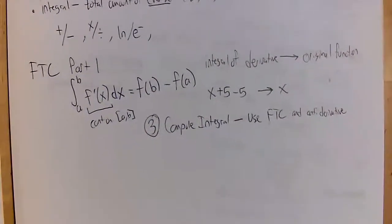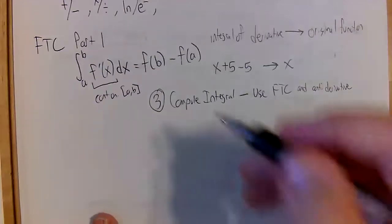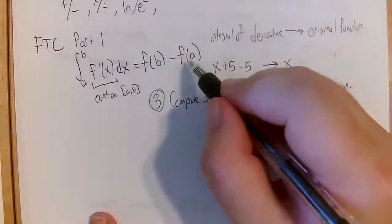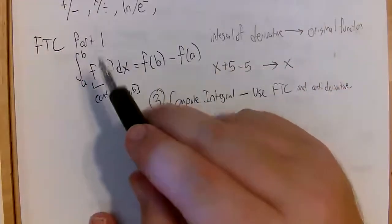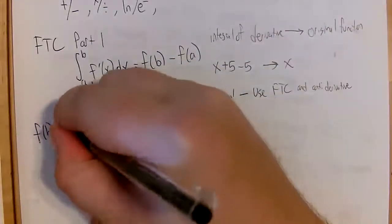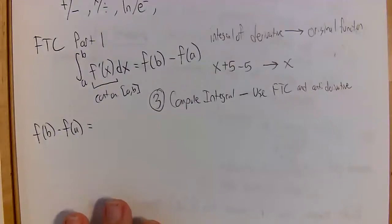Now this isn't a heavy proof-based class, but for the Fundamental Theorem of Calculus I do want to go through a proof. What I'm going to do is start with f of b minus f of a and work my way toward getting the integral. So we have f of b minus f of a, and I'm going to rewrite this as n differences — breaking it up into pieces.